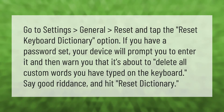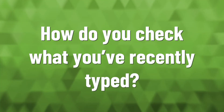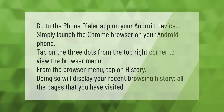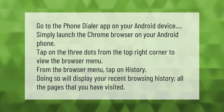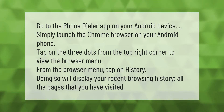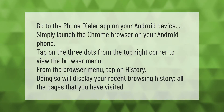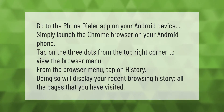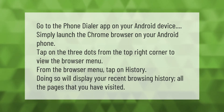Go to the phone dialer app on your Android device. Simply launch the Chrome browser on your Android phone, tap on the three dots from the top right corner to view the browser menu. From the browser menu, tap on History — doing so will display your recent browsing history, all the pages that you have visited.